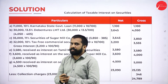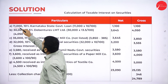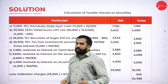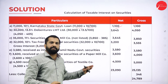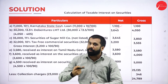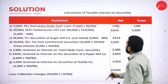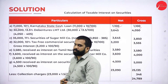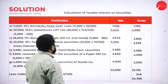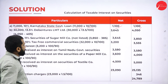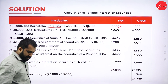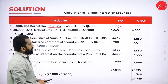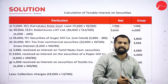Now for Part A, we calculate one by one. First: 11,000 × 10% = 1,100. Whatever answer you got here is the net answer. For the Karnataka State Government loan, both gross and net are the same value — 1,100 — because it is a government security with no TDS adjustment needed.